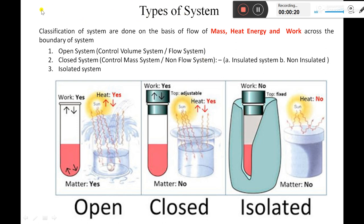Basically, the systems are classified on the basis of how the flow of mass, heat, and work take place across the boundary. The boundary is the thing which keeps the system different from the surrounding, which is enveloping a system, or we can say which is isolating a system from the surrounding, and that boundary may be real or hypothetical. So on the basis of mass transfer, heat energy transfer, and work transfer across the boundary between system and surrounding, the system gets classified.